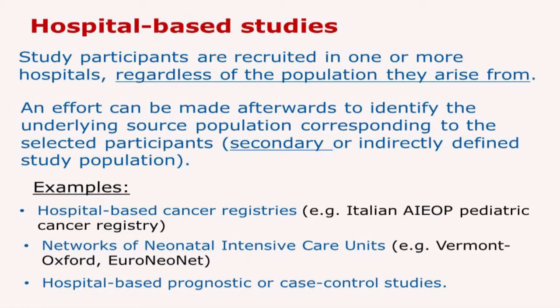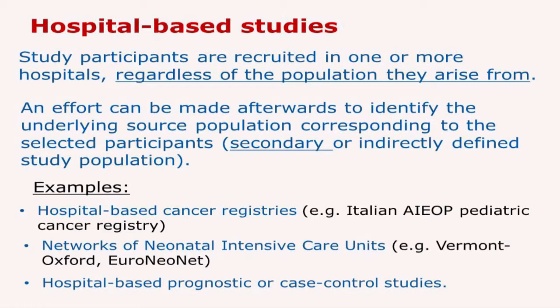In contrast, hospital-based studies are characterized by the fact that participants are recruited in one or more hospitals, regardless of the population these cases arise from. This means that an effort can be made afterwards to try to define the population from which these cases originated. The population is defined starting from the cases — that is why it is called secondary population or indirectly defined study population. And we will see later that sometimes this exercise is almost mission impossible.